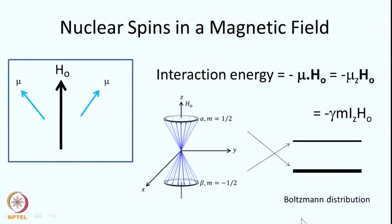This is explicitly given by this equation: the interaction energy is given by minus mu dot H-naught, where mu is the magnetic moment and H-naught is the applied field. For a spin-half there are two orientations — these states are represented as alpha and beta. Alpha is the state whose z component is parallel to the magnetic field, and beta is the state where the spins are oriented anti-parallel. The alpha state has lower energy for positive gamma, and in most cases we deal with positive gamma except nitrogen-15, which has a negative gamma value.